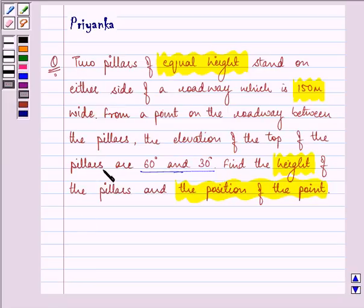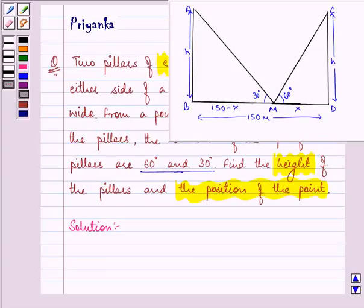So here let us have a diagram to model the situation. Let this be the diagram where A and B are the two equal pillars standing on either side of the roadway which is 150 meters wide.